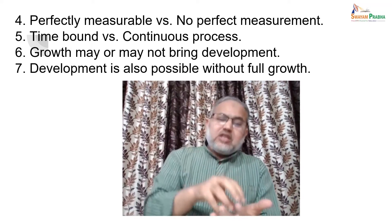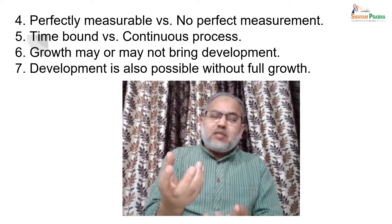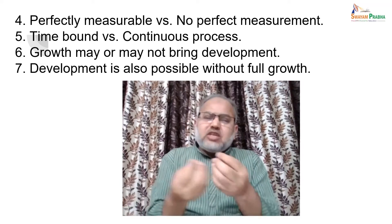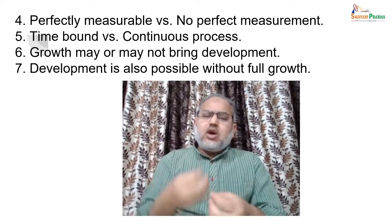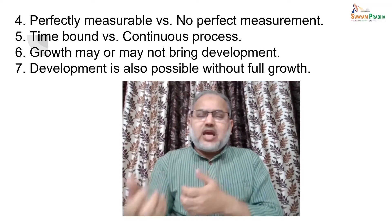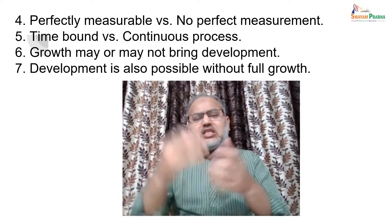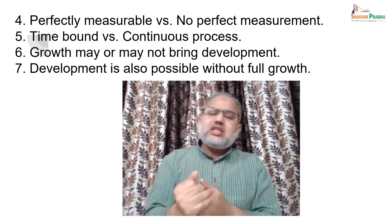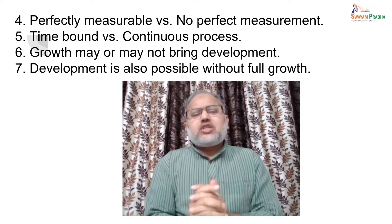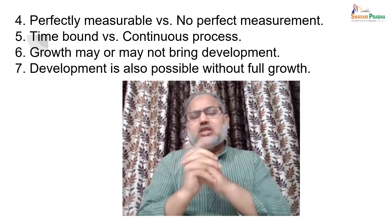At one point in time, the same intelligence test may give 120 IQ for a child, and at another time the same test by the same child may give 118 or 130 IQ. Tools to measure attitude, aptitude, and interest are personality variables and developmental aspects which cannot be measured with perfection. Although we try to measure these things for educational purposes, these tools do not give perfect results.